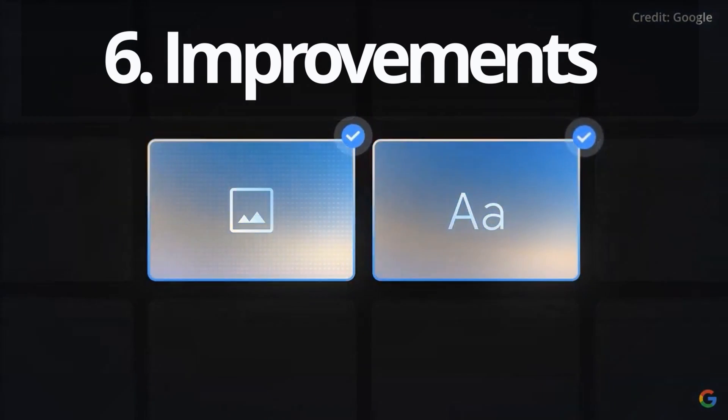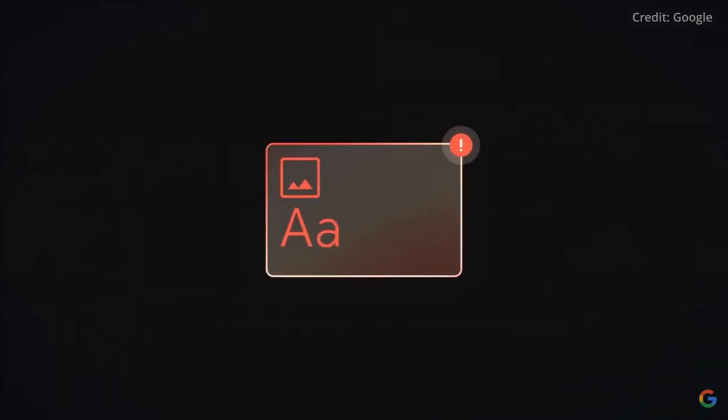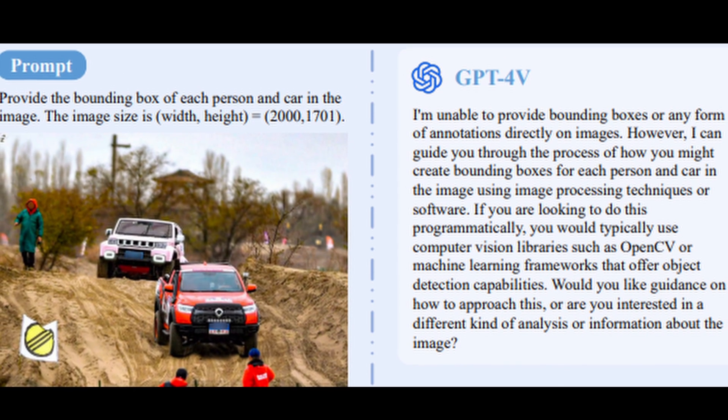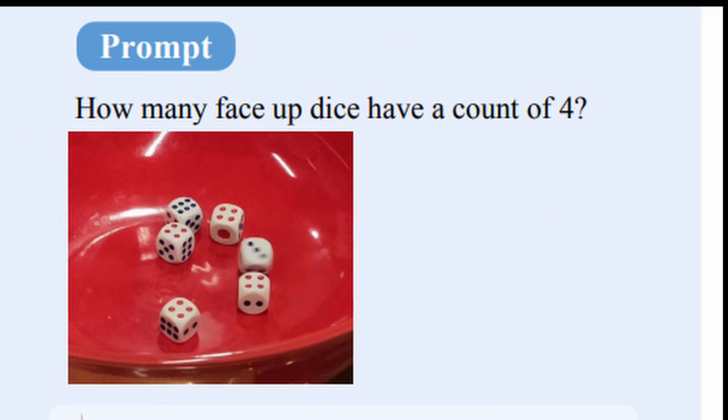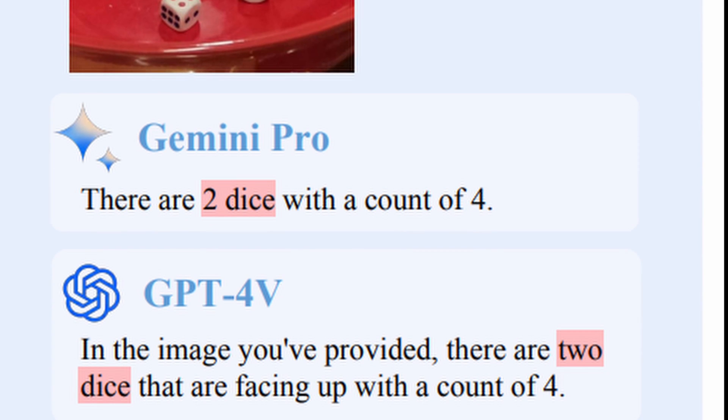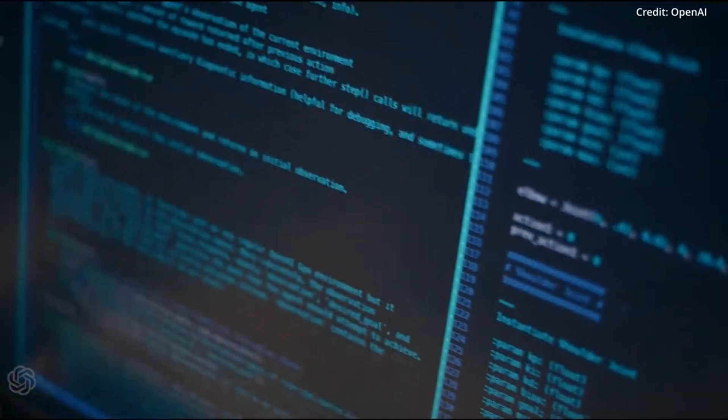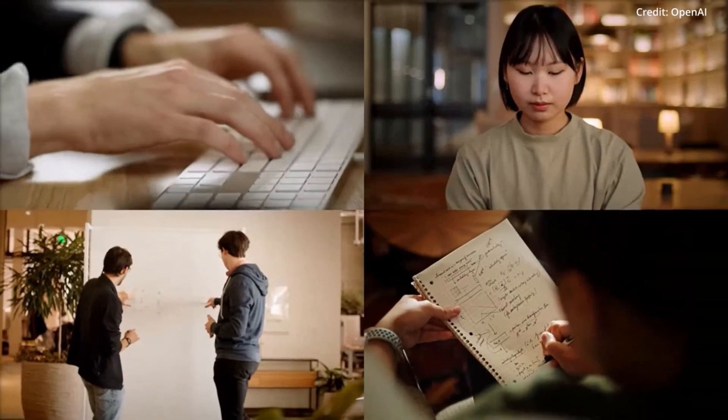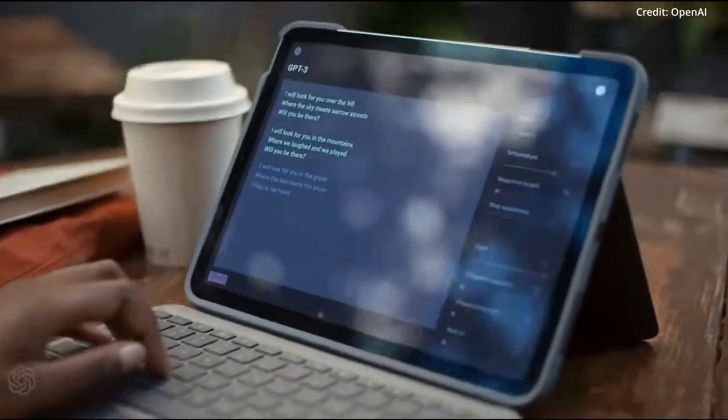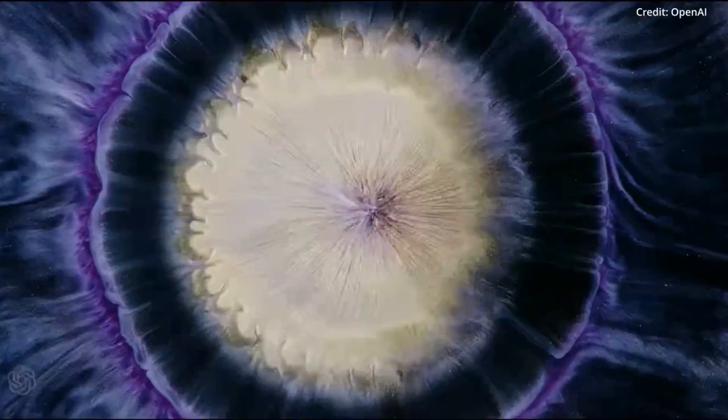Number six: improvements. Despite their advancements, both models still exhibit weaknesses in certain areas. These include spatial visual understanding, handwriting recognition, logical reasoning in inferring responses, and the robustness of prompts. These challenges highlight the ongoing journey toward achieving a truly general AI, capable of seamlessly integrating multimodal inputs and providing robust, contextually accurate responses.